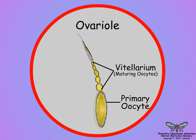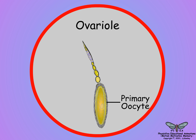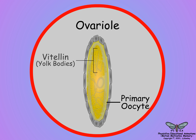Yolk proteins form in the oocytes during their growth phase as they transit along the ovariolar vitilarium to the oviduct. After fertilization, the developing insect embryo relies on the degradation of accumulated yolk protein, termed vitalin, that is stored in the oocyte in mature yolk bodies, as its source for chemicals for growth.